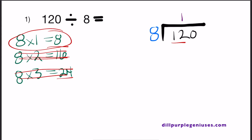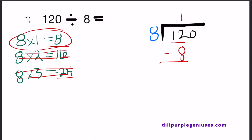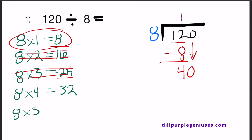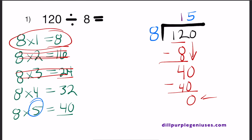We can place the 1 above the 2. So 8 times 1 equals 8. Now we can subtract: 12 minus 8 equals 4. And we can now bring down the 0. How many times does 8 go into 40? 8 times 5 equals 40. So 8 times 5 equals 40, and if we subtract, we get 0. Since this result is 0, we can stop here. In conclusion, 120 divided by 8 is 15.